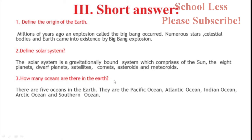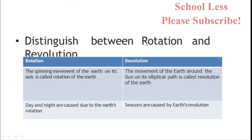How many oceans are there on Earth? There are five oceans: the Pacific Ocean, Atlantic Ocean, Indian Ocean, Arctic Ocean and the Southern Ocean. Distinguish between rotation and revolution: The spinning movement of the Earth on its axis is called rotation of the Earth. The movement of the Earth around the Sun on its elliptical path is called revolution of the Earth. Day and night are caused due to the Earth's rotation. Seasons are caused by Earth's revolution.